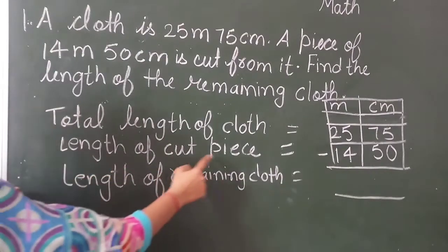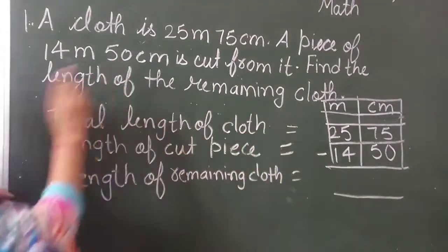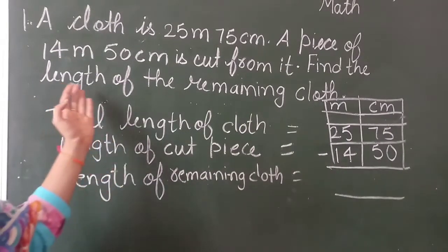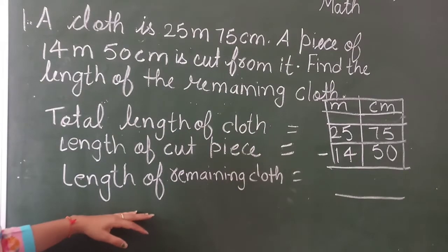Next is length of cut piece. The length of cut piece is 14 meter and 15 centimeter. Now what they are asking? They are asking the length of the remaining cloth. The remaining cloth length what we have to do?